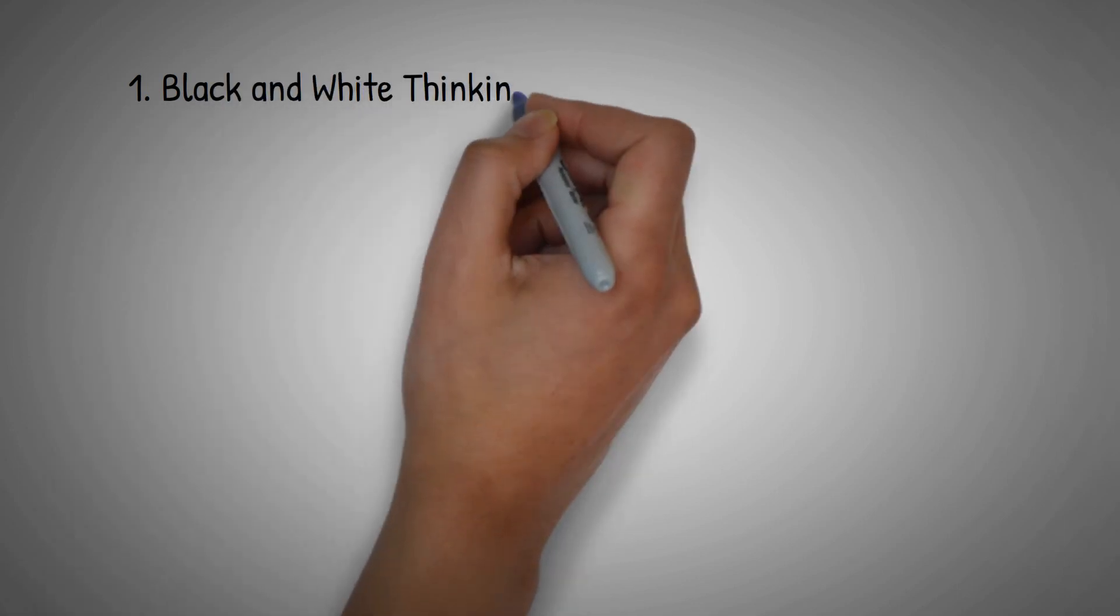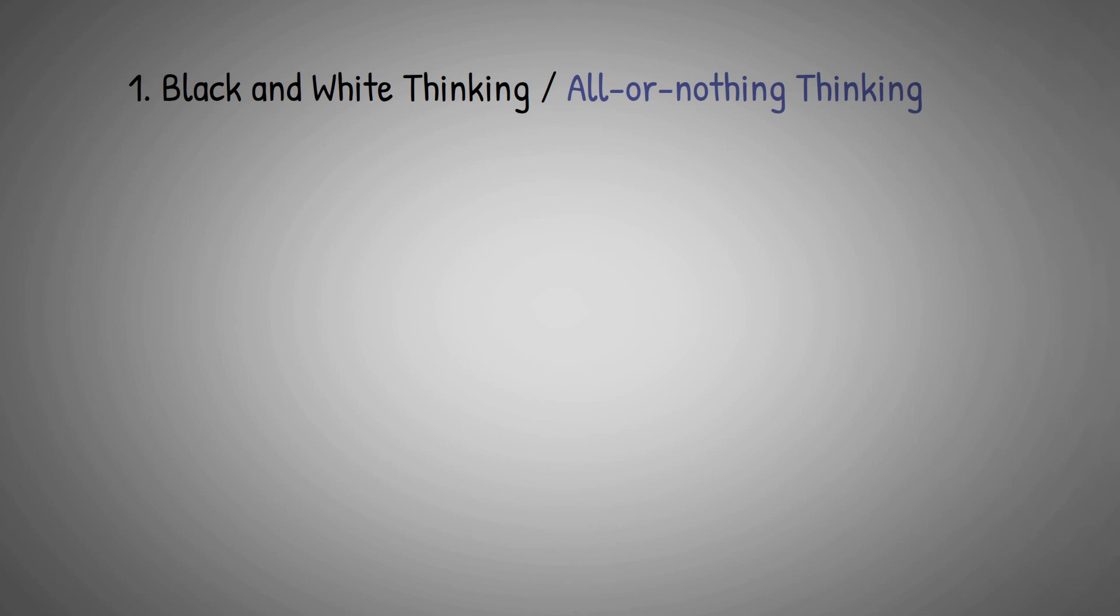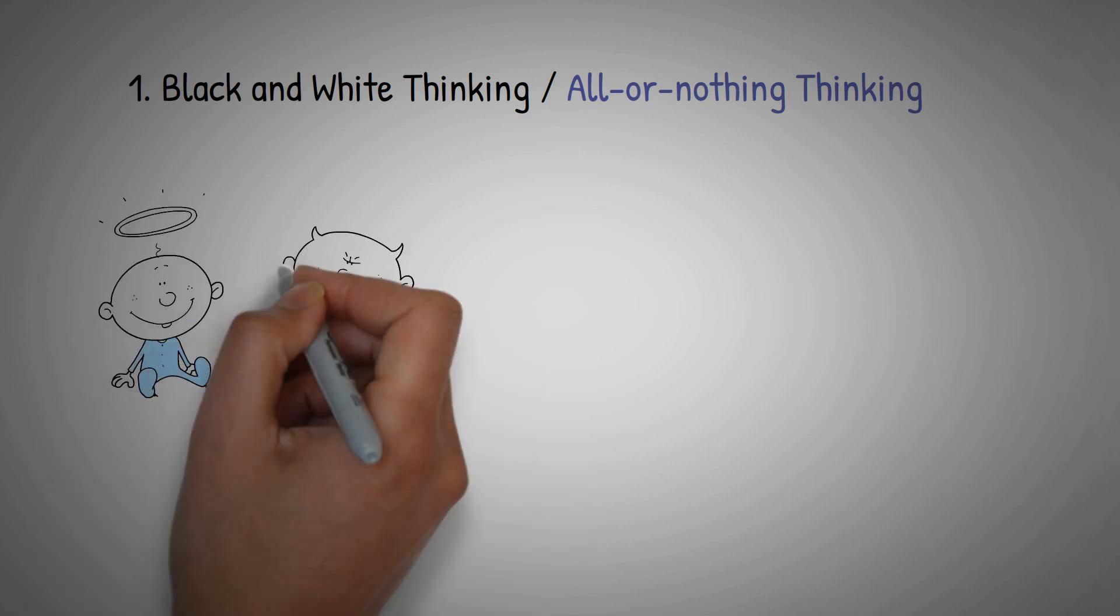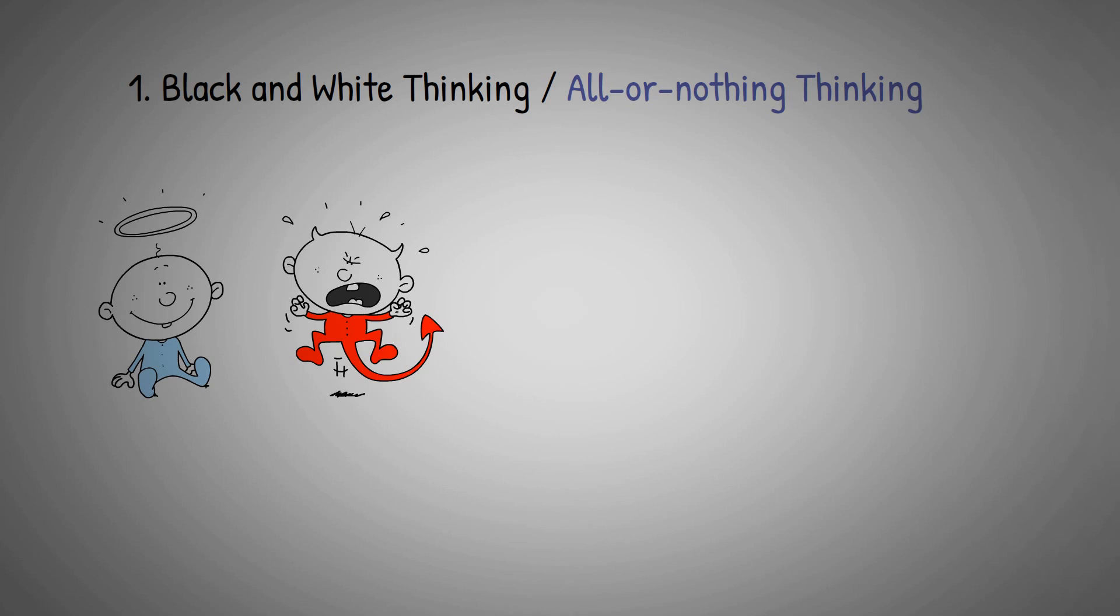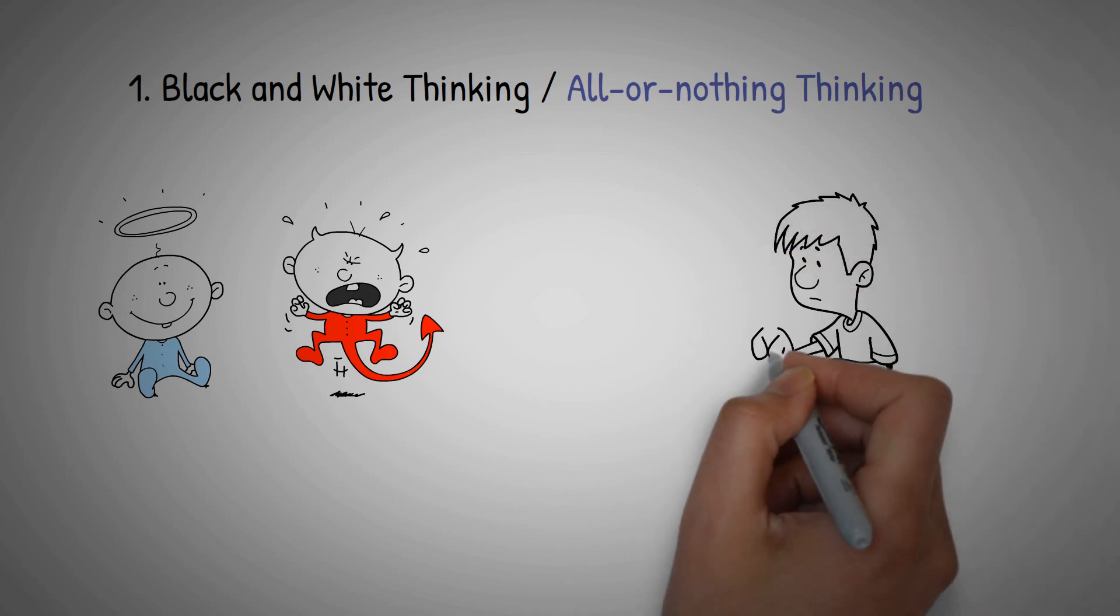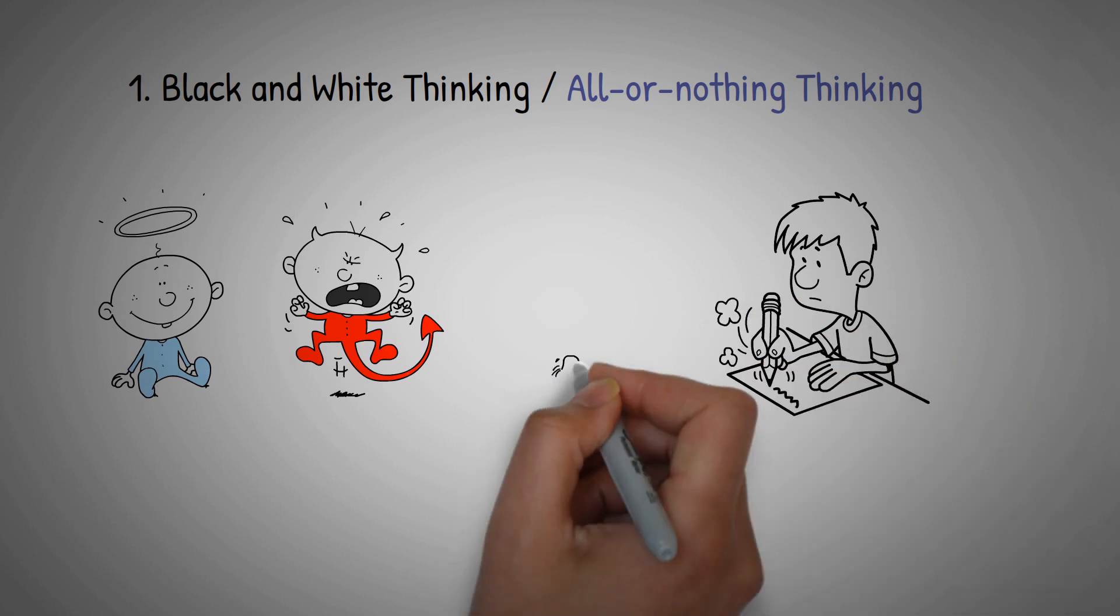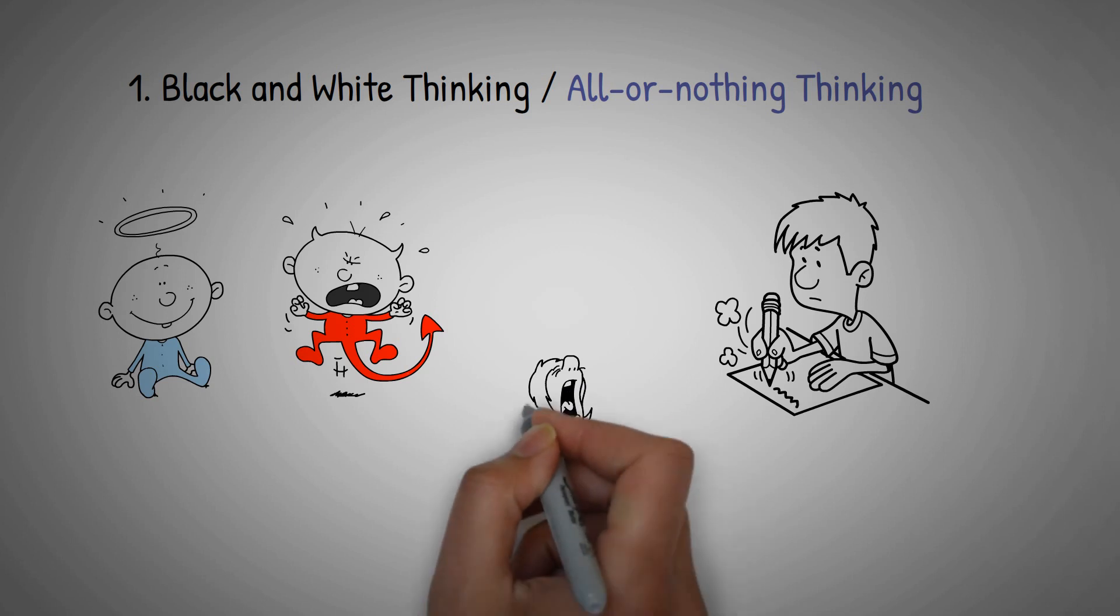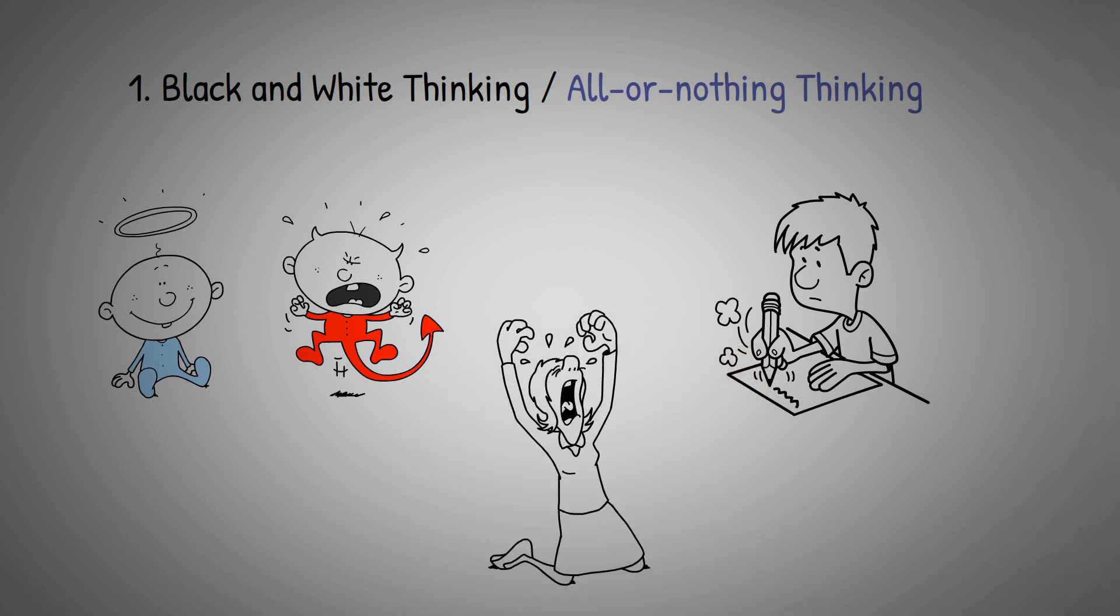One common, unhelpful thinking pattern is black-and-white thinking, also known as all-or-nothing thinking. This is when we see things as either completely good or completely bad, with no middle ground. For example, you might think that if you don't get a perfect score on a test, you're a complete failure. This kind of thinking can lead to feelings of disappointment or worthlessness and might even make you avoid situations where you might not succeed perfectly.